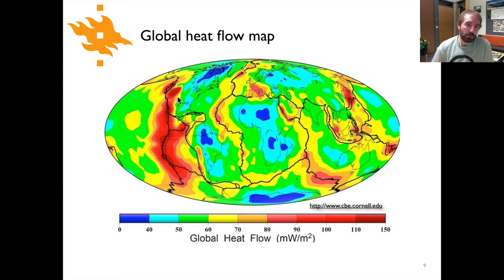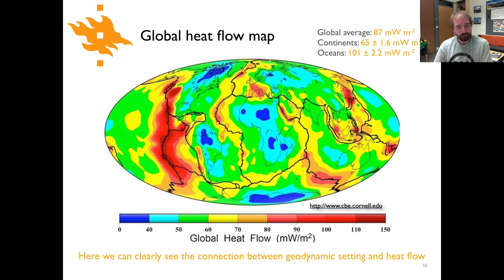If you look for instance in the western United States where we have active extensional tectonics, we see high heat flow values there. We see high heat flow over near Japan and of course along places where we have rift basins that are opening up as well as parts of central Europe.